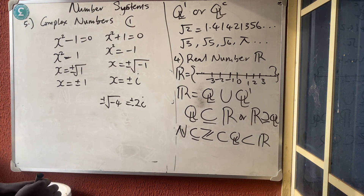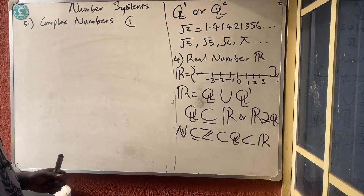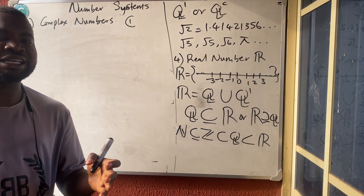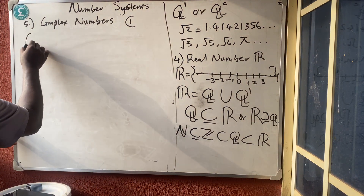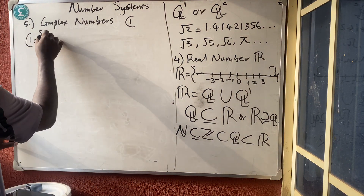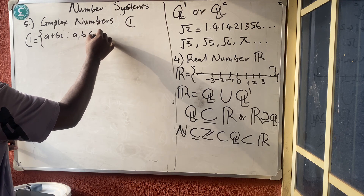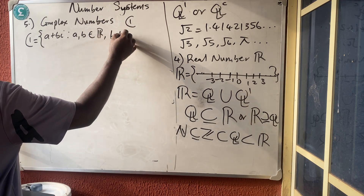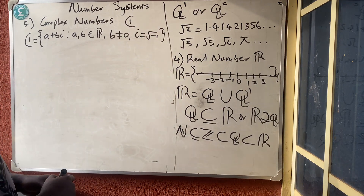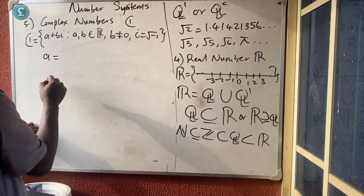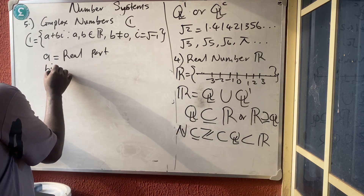That is what brought about the complex number. A complex number is a set of numbers that has both a real part and an imaginary part. Mathematically, complex numbers are defined as the set of a + bi, such that a and b are elements of real numbers, b ≠ 0, and i = √(-1). We call 'a' the real part and 'bi' the imaginary part.